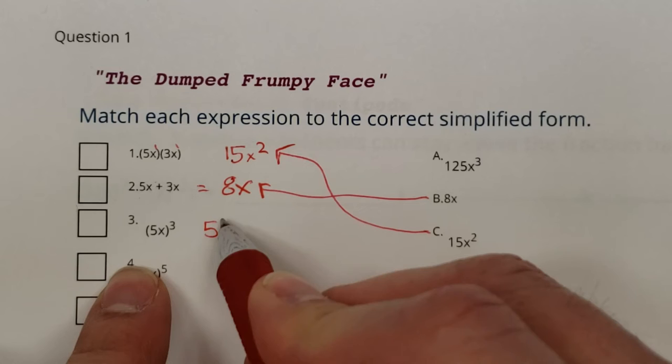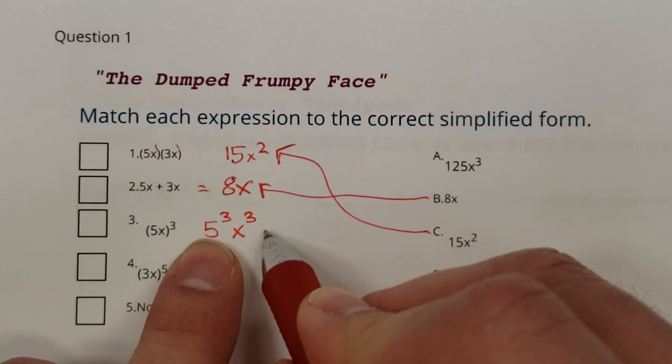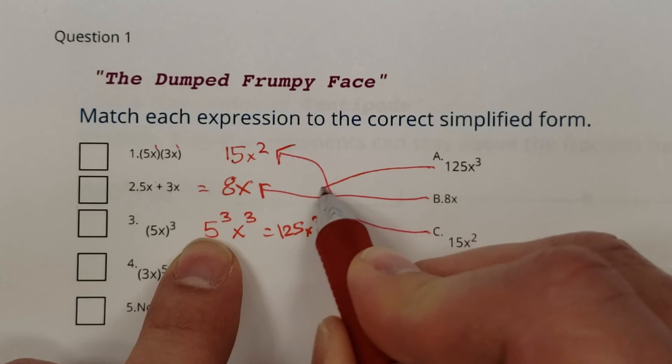Frying pan rules. 5x to the third power would be 5 to the third, x to the third. 5 to the third power, I believe, is 125. So 125 x to the third power. There you are right there.